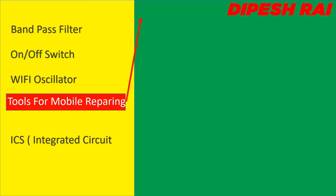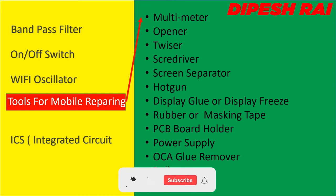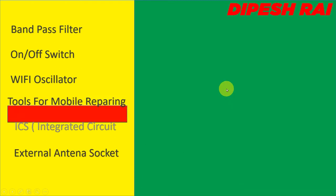Now we are discussing the tools for mobile repairing. The tools include: multimeter, opener, tweezer, screwdriver, screen separator, hot gun, display glue, rubber or masking tape, PCB board holder, power supply, IPA glue remover, roller, and many more. These are the basic types of repairing tools which you need before doing mobile repairing.